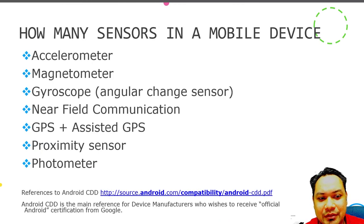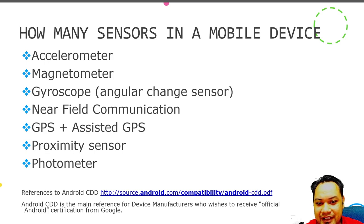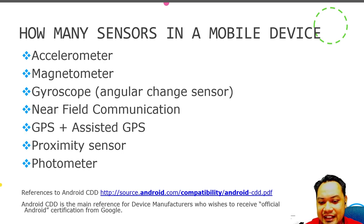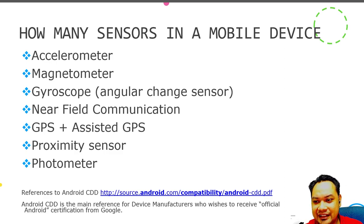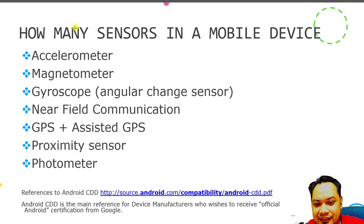Your mobile device also has a wide set of sensors. These include an accelerometer, magnetometer, gyroscope, Near Field Communication or NFC, GPS or assisted GPS, LBS, proximity sensor, photometer, and more. If you read the Android Compatibility Definition Document or Android CDD, you can see there are certain rules that Android device manufacturers must adhere to — all Android devices certified by Google must include certain mandatory sensors.